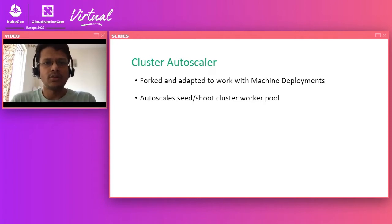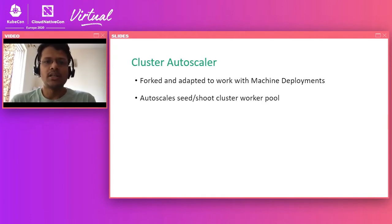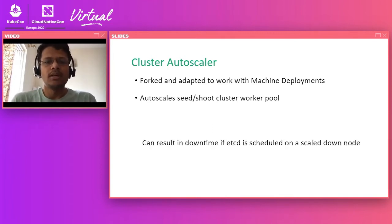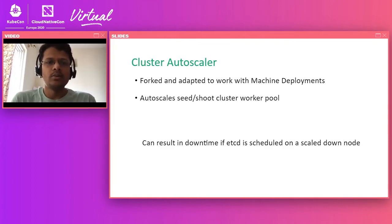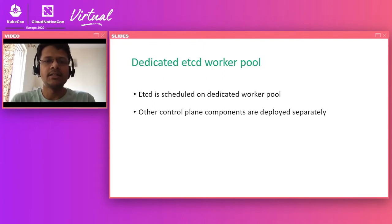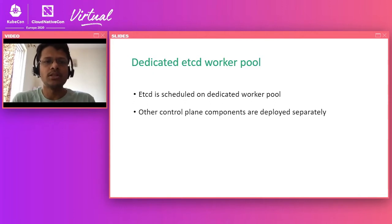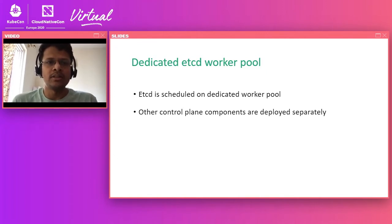We also rely on cluster autoscaler, which we have forked and adapted to work with machine deployment objects. With this we can auto-scale our shoot clusters — the user clusters — and the seed clusters managing the shoot clusters themselves. A potential problem is that if an etcd pod is scheduled on a node that is getting scaled down, it can lead to long downtime. To prevent this, we deploy etcd in a separate dedicated worker pool so the worker pool hosting the other control plane components of the shoot cluster can still be scaled down when load decreases.